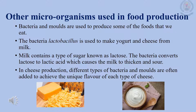Other than yeast, there are more microorganisms used in food production. Bacteria and moulds are used to produce some of the foods that we eat. Various dairy products can be made from milk, such as yogurt and cheese. They are made by adding a mixture of lactic acid bacteria to the milk. These bacteria are called lactobacillus. Milk contains a type of sugar known as lactose. By adding lactobacillus to the milk, the milk starts to ferment, and during fermentation, a proportion of the lactose is converted to lactic acid. Because of the lactic acid, the milk gets thickened and tastes sour. In cheese production, different types of bacteria and moulds are often added to achieve the unique flavor of each type of cheese.